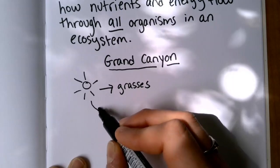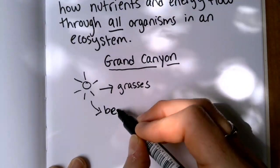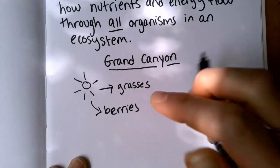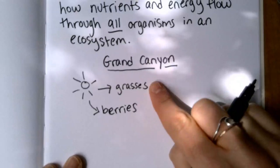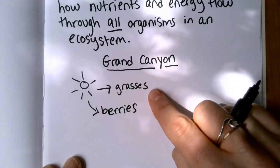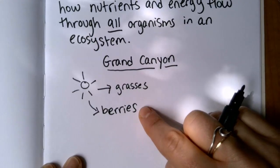So this is actually showing what nature is more like, right? In the Grand Canyon, there's not just grasses. There's also other plants like berries. So this is our first step in showing that this is more realistic than a food chain. This is more like how nature works.